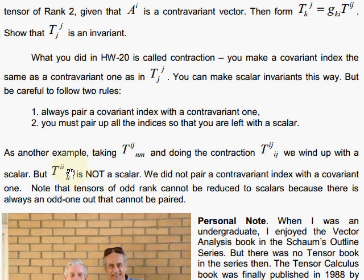If you did it this way, where you tried to make the top ones pair up, that would not be a scalar. That would not work. You need to pair a covariant with a contravariant.